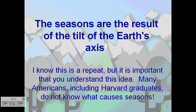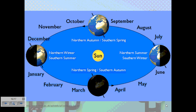To recap, I want you to understand that the seasons are the result of the tilt of the Earth's axis. I know I've repeated this piece of information, but it's very important that you understand this idea. Many Americans, including Harvard graduates, do not know what causes seasons — but now you do, and hopefully you can carry this information on to other people. I'd like to leave you with a final image that depicts the Earth's axis as it spins around the sun, showing the various tilt angles and geographic locations of countries during those particular parts of the year.